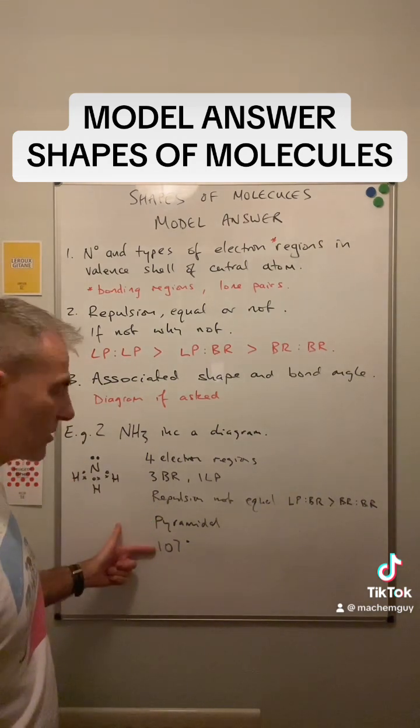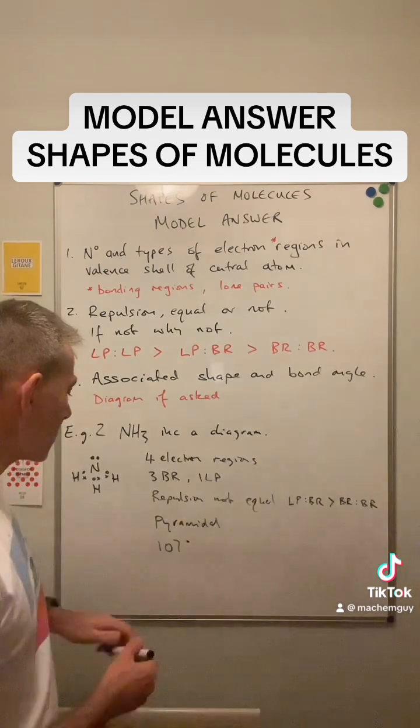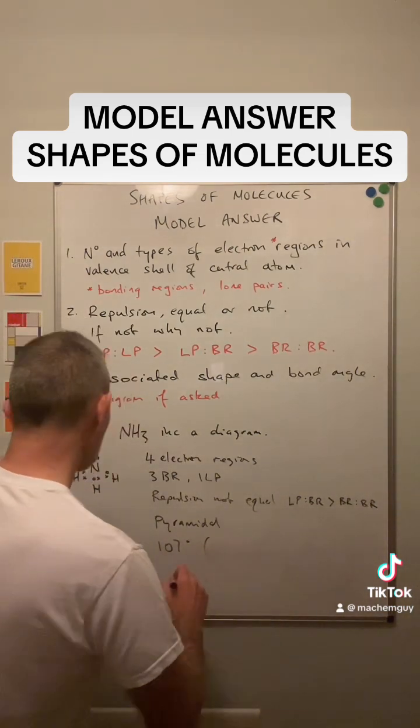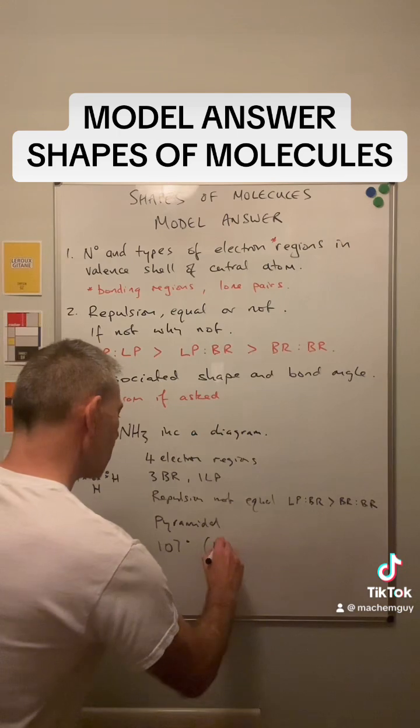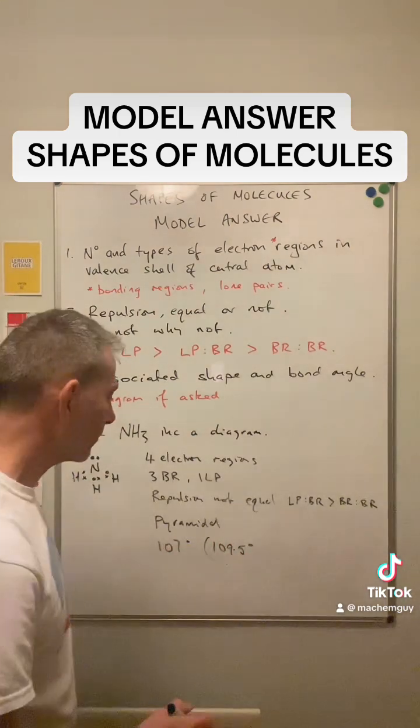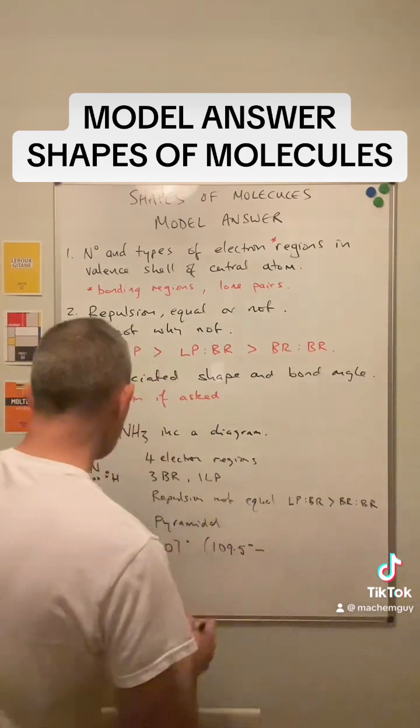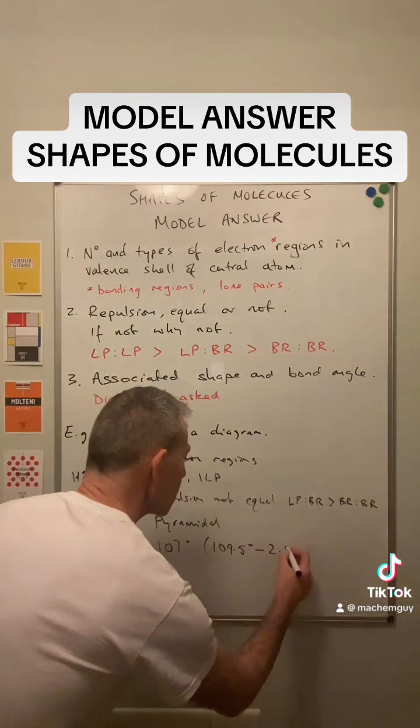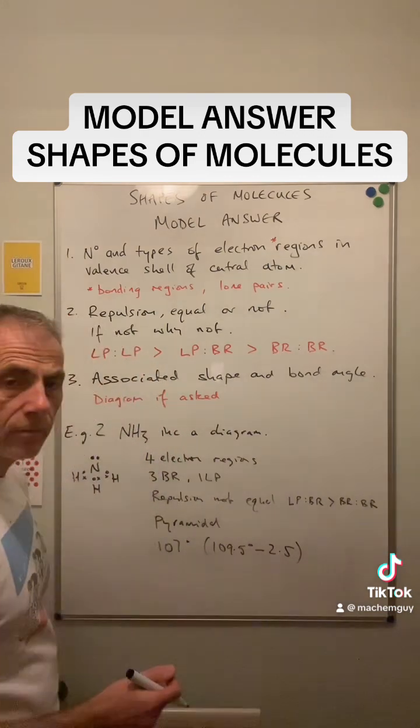And it's 107 degrees bond angle. Where's that coming from? So you've got four electron regions, 109.5 degrees, if they'd all been bonding regions. And then we take off two and a half degrees for the extra repulsion from that lone pair.